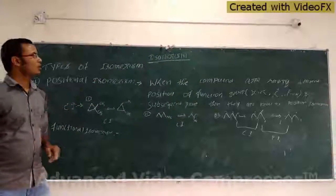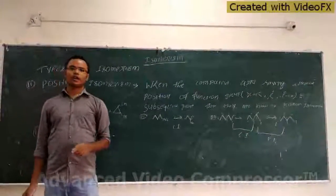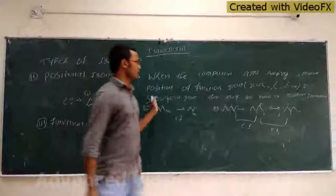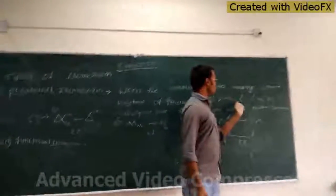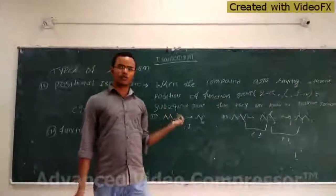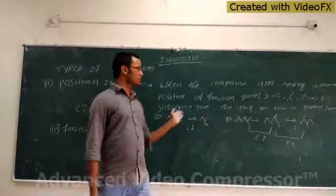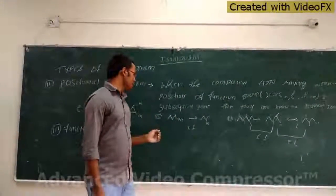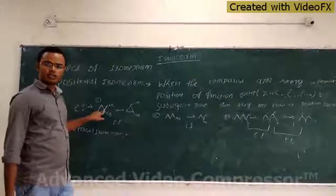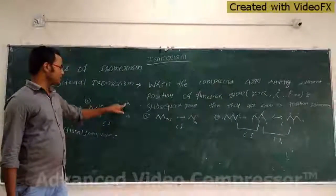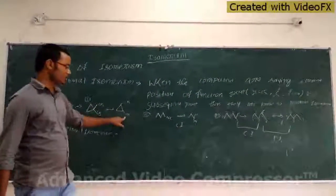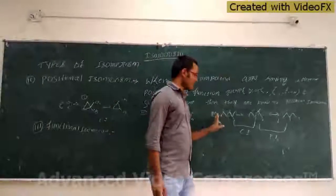Now we come to position isomerism. When a compound has a different position of the functional group — just like the functional group is a double bond, triple bond, or substituent — and the substituents are also at different positions, those are called positional isomers. Just see the example. Here CH3 groups are at the same position, but here CH3 groups are at different positions, so the substituents have a different position.